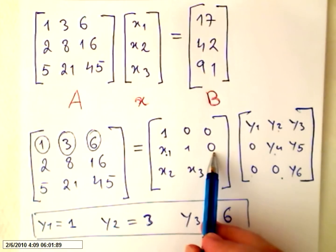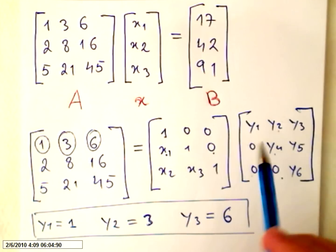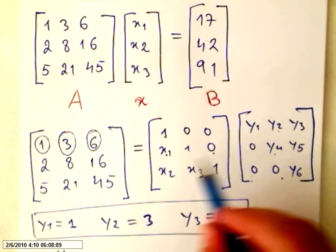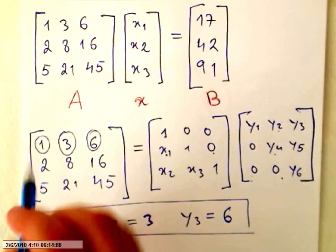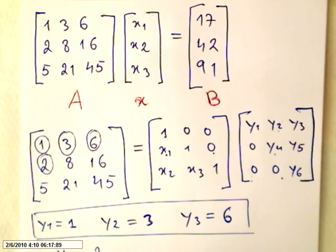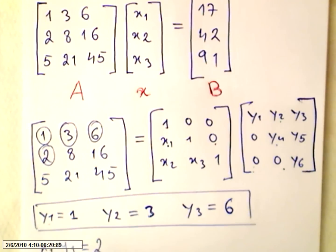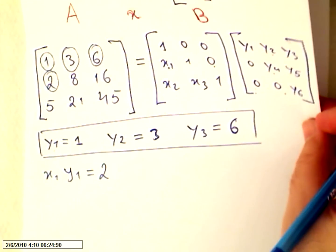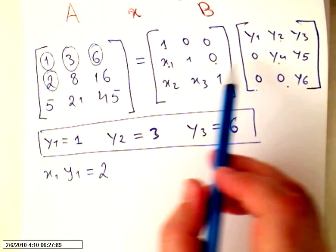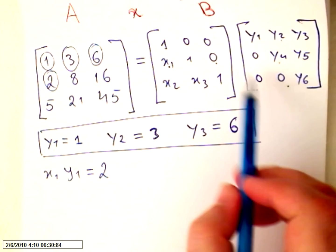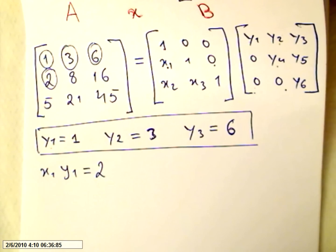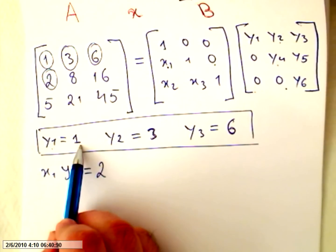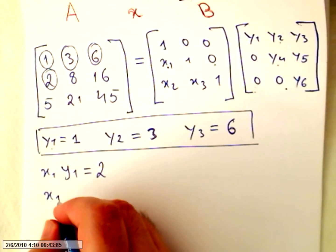Now, second line times the first column, it will be x1 times y1, the others are 0, equals 2. x1 times y1 equals 2. But we know y1, x1 times y1 equals 2. x1 equals 2.